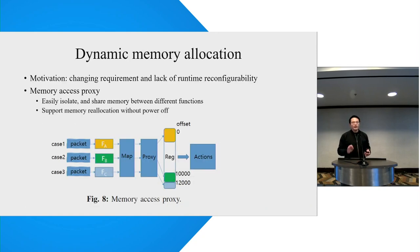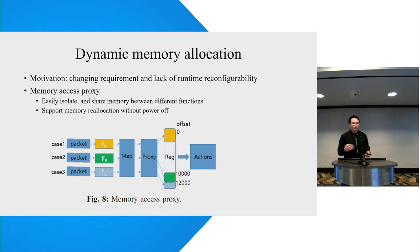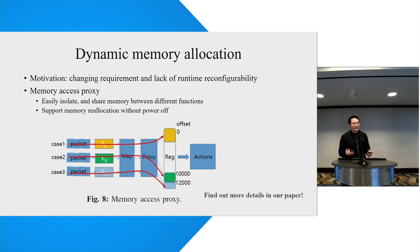The third mechanism in our paper is dynamic memory allocation. Some attackers may change their attack vector to bypass the defense system, since different attacks have different patterns. To capture different patterns, we need to deploy different functions and store different network states, which can introduce huge storage overhead. To address this, we design a memory access proxy to isolate and share memory between multiple functions, and we can also reallocate memory for each function as needed. More details can be found in our paper.